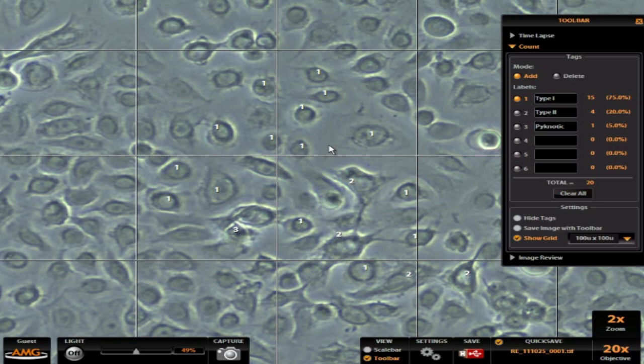So this is a fairly simple, straightforward tool that works very nicely. It has options such as saving the image with the toolbar. If we turn this on and we save this image, we're going to get not only the grid and the tags that we've put down here, but it's also going to embed this information inside of this count rectangle.